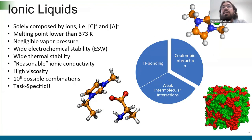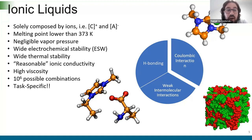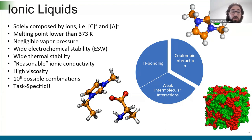Now, talking about science — a brief introduction about ionic liquids. What is an ionic liquid? An ionic liquid is a molten salt that is generally liquid at temperatures lower than 373 Kelvin. Ionic liquids are salts, so they are composed of ions. They have very interesting properties that make them useful in different applications: negligible vapor pressure, wide electrochemical stability, and wide thermal stability, meaning we can use ionic liquids in different conditions.